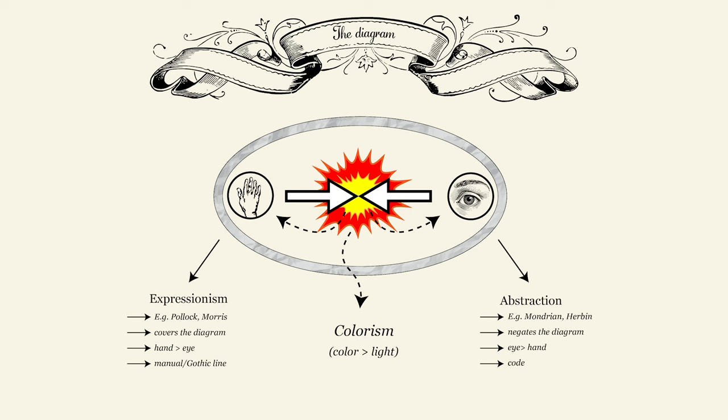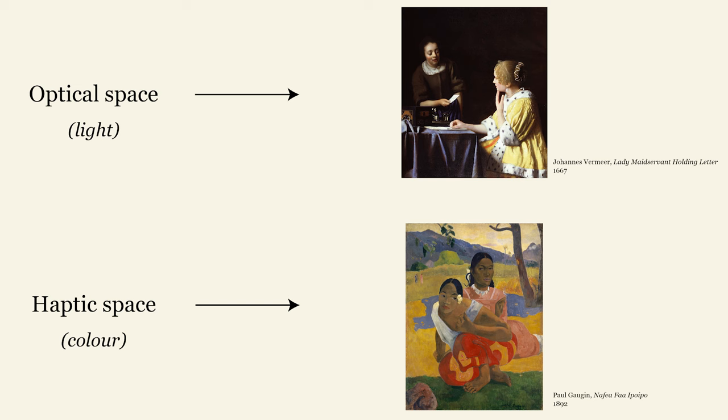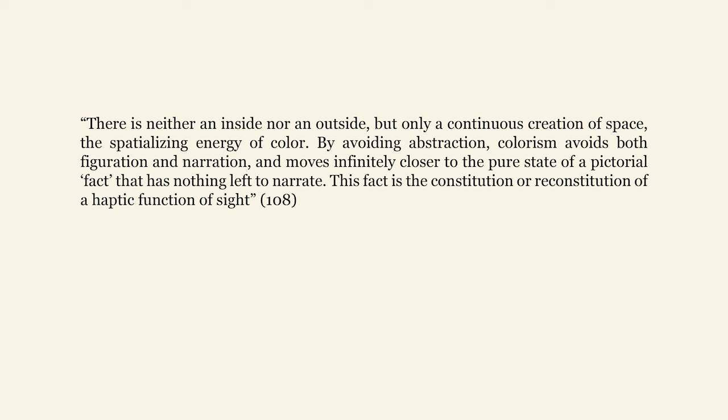What exactly does it mean to grasp space in haptic vision? Optical perception is grounded in relations of light, and these relations give space to the eye — they offer volumes and surfaces to perception, which is why such space is essentially representational and narrative. Haptic space, on the other hand, is grounded in the perception of regimes of colours, such that perception is not the reception of space but the encountering of a force — a force which, as Deleuze says, is the creation of space. It is in this sense that it is an active sensation. There is neither an inside nor an outside, but only a continuous creation of space, the spatialising energy of colour. By avoiding abstraction, colourism avoids both figuration and narration, and moves infinitely closer to the pure state of a pictorial fact that has nothing left to narrate.